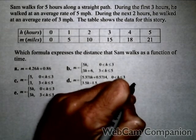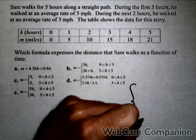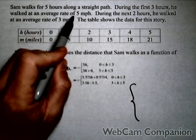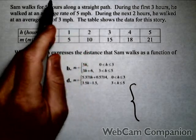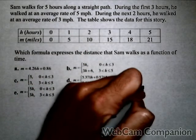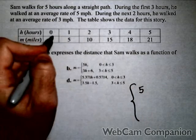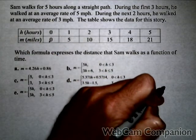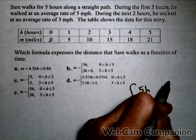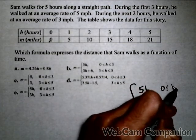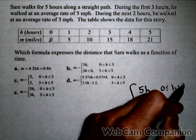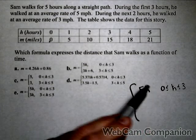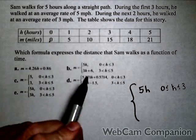So first off, we know that he walks at five miles per hour from zero to three hours. So five miles per hour, and he had gone no distance at no time, so 5h when h ranges from zero to three. Because there's our five miles an hour, that's our rate of change. The y-intercept is zero because he started at zero.